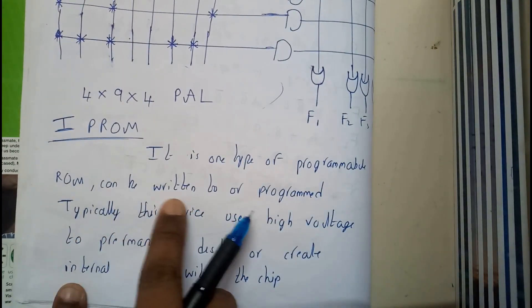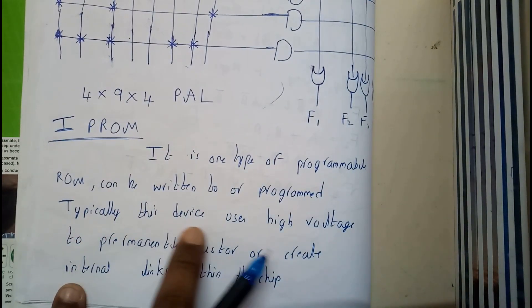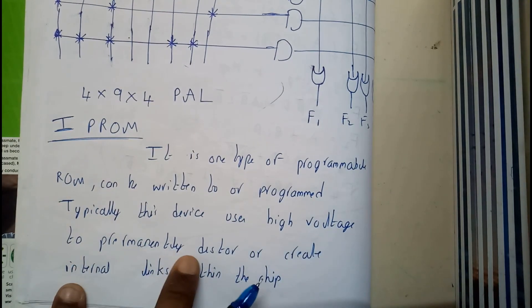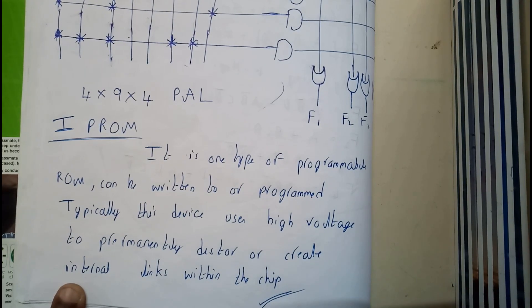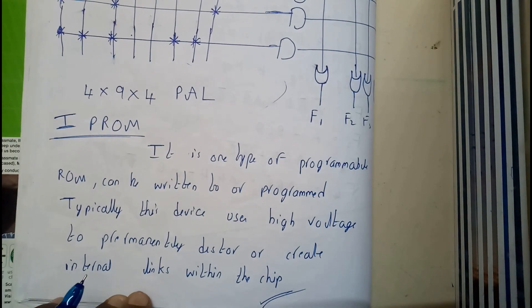Programmable ROM is one type of programmable ROM that can be written to or programmed. Typically this device uses high voltage to permanently destroy or create internal links within the chip.